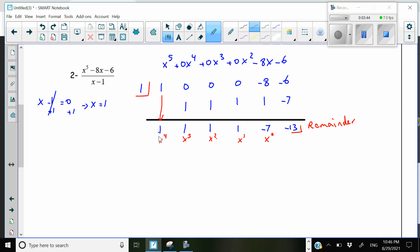And each time you add 1 to the exponent. Now I'm ready to write my quotient. 1 times x to 4, which is just x to 4. 1 times x to 3, x to 3.